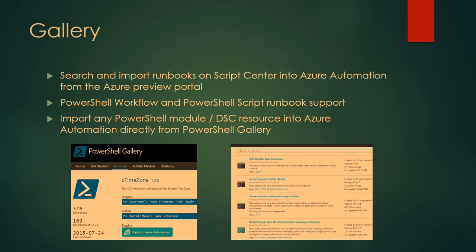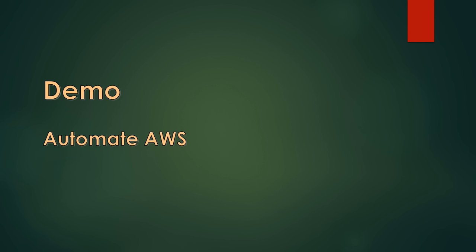Another thing we have support for today is gallery. You can go to the PowerShell Gallery, find a module, click 'Deploy to Azure Automation,' and it'll add it into your Azure Automation account just like that. We also have the ability, in the new preview portal, to browse a gallery that shows everything on Script Center and lets you easily import those into Azure Automation. It also supports script runbooks, so all the scripts already on Script Center will show up and you can bring one in as a script runbook. Since I already showed stopping Azure VMs, the next thing I'd show is stopping AWS VMs — to demonstrate that Azure Automation can manage cross-cloud and on-premises.